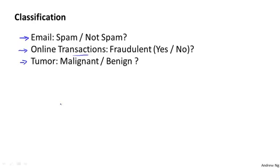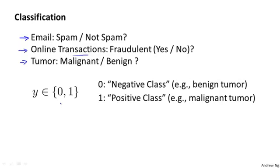In all of these problems, the variable that we're trying to predict is a variable y that we can think of as taking on two values, either zero or one: either spam or not spam, fraudulent or not fraudulent, malignant or benign. Another name for the class that we denote with zero is the negative class. And another name for the class that we denote with one is the positive class.